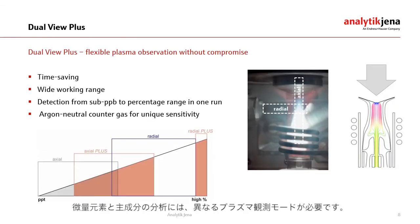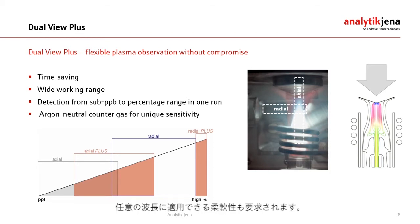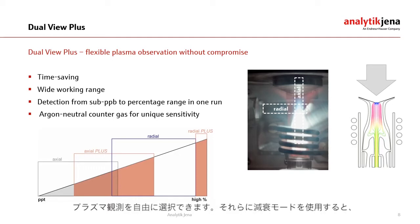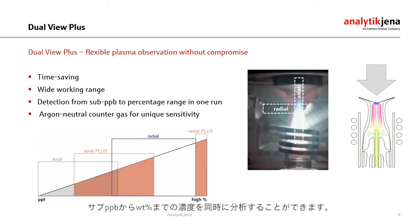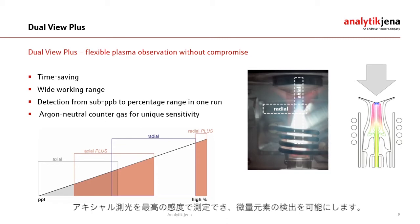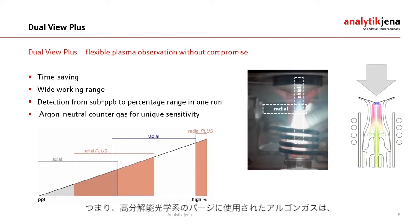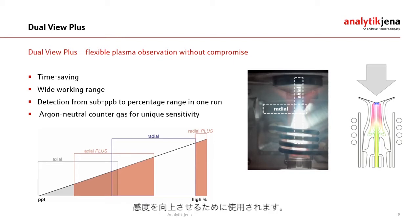The analysis of trace elements and major constituents requires different plasma observation modes and the flexibility to apply any mode to any emission line in a single method. Our dual view plus option enables free selection of the radial and axial plasma view and additionally allows use in an attenuated mode. With this concept it is possible to perform synchronous analysis of contents ranging from the sub-ppb to the high weight percent. The intelligent argon neutral counter gas technology provides highest sensitivity in axial observation, using the argon that purges the high resolution optics to remove the plasma tail, which is known to cause spectral interferences and reduce overall sensitivity.